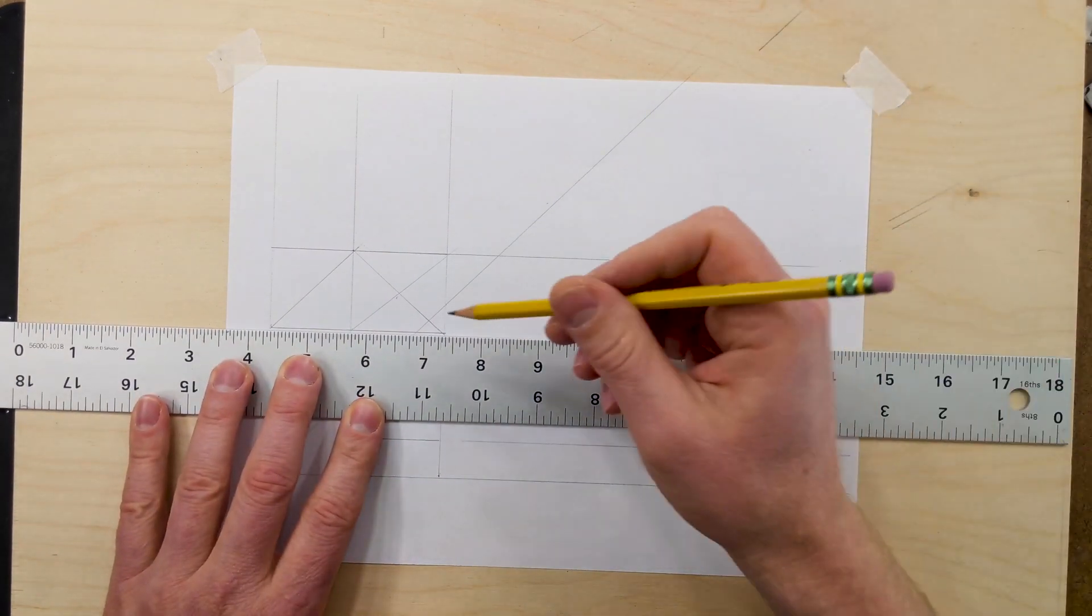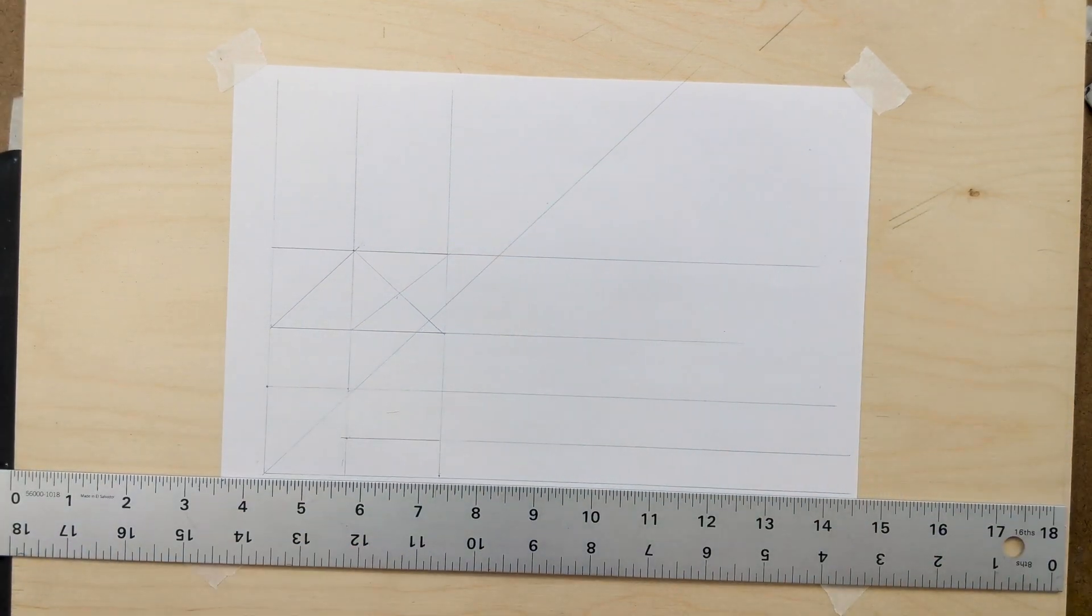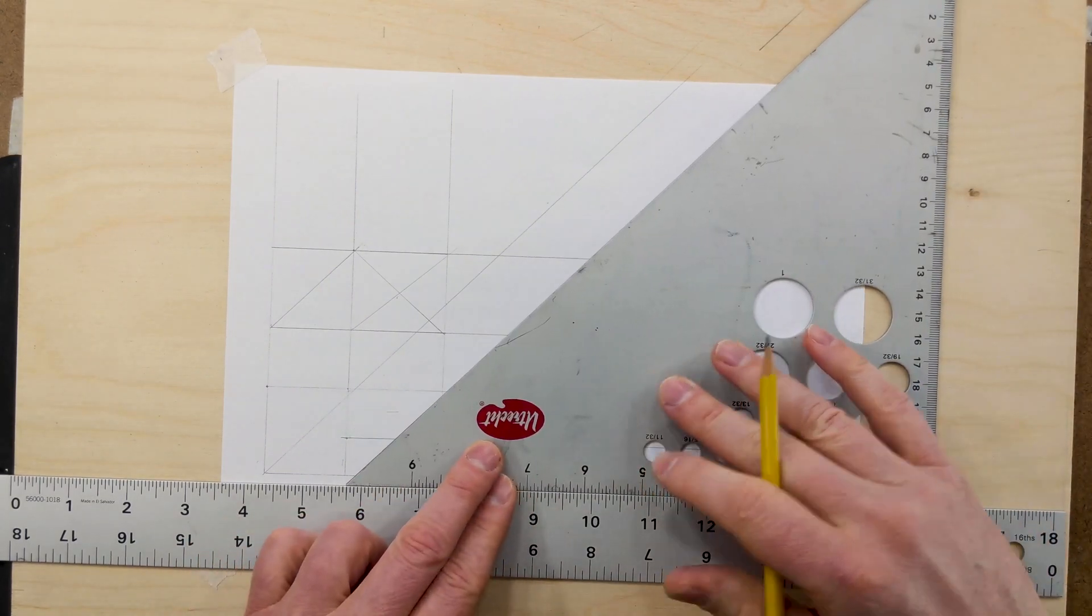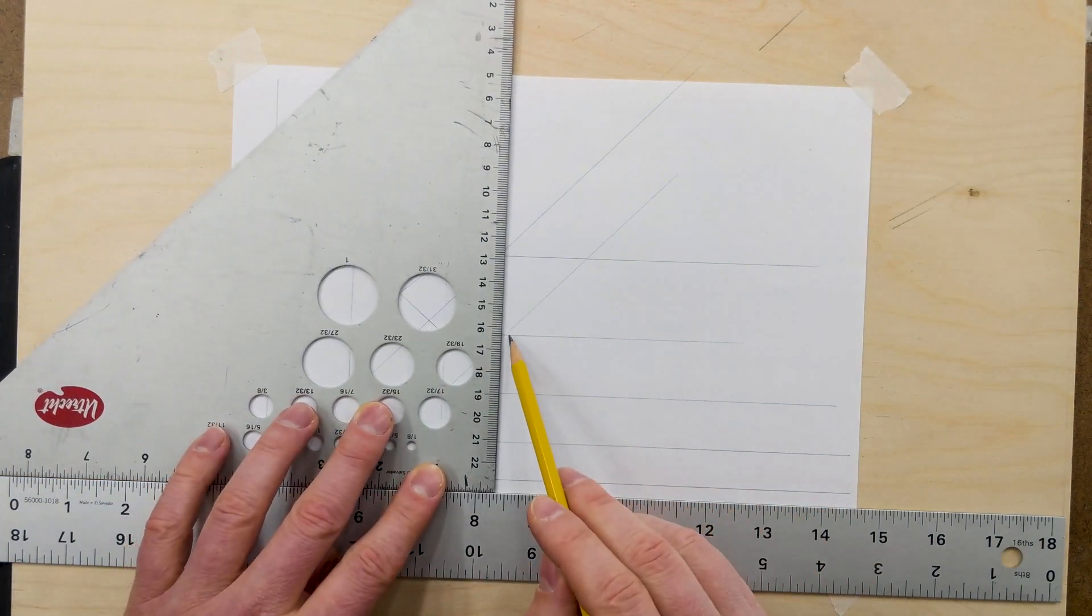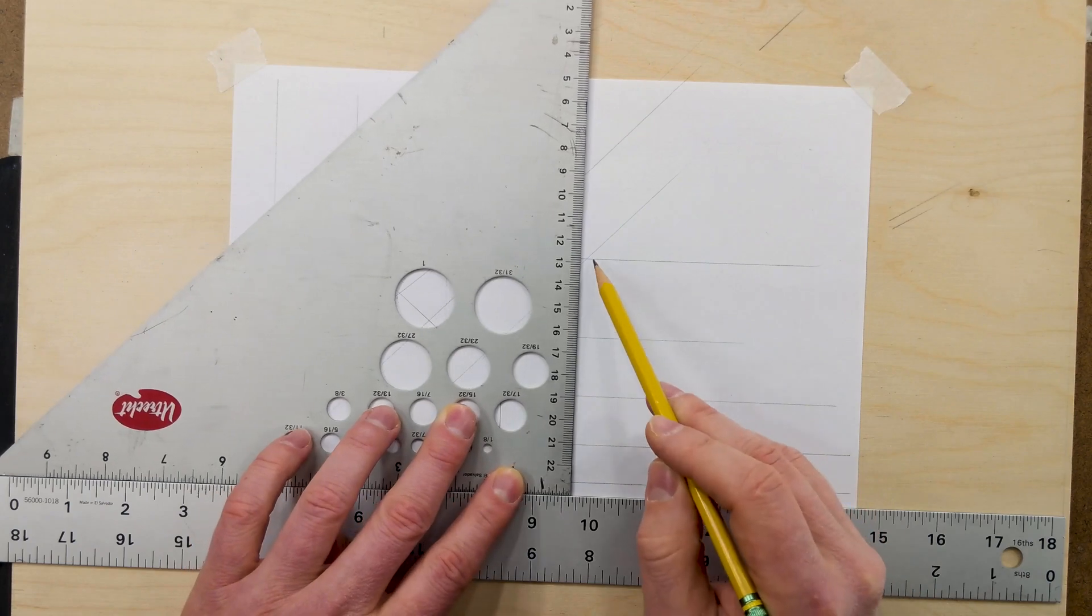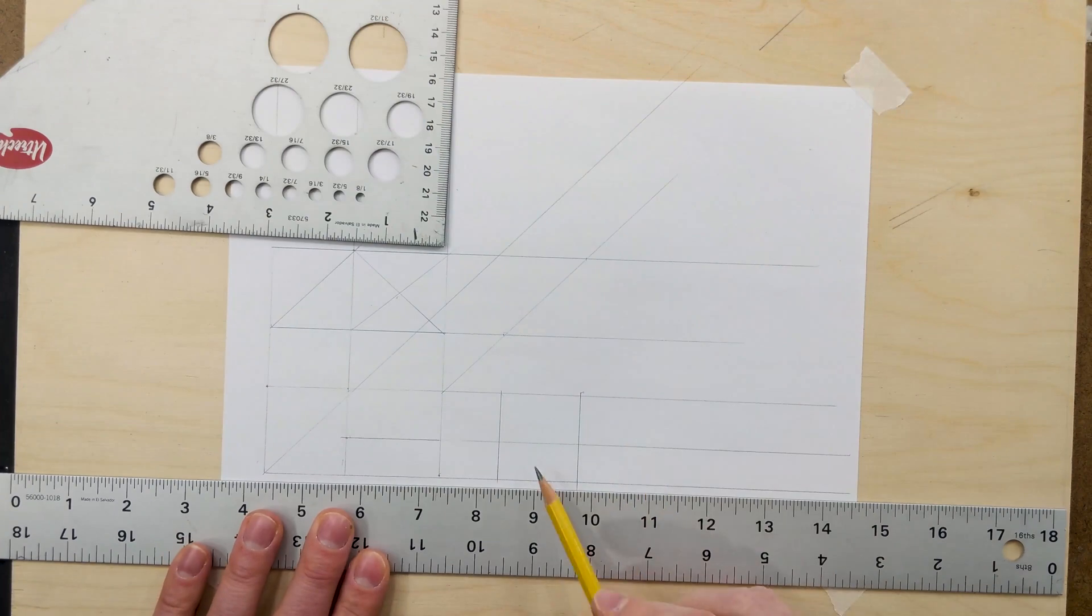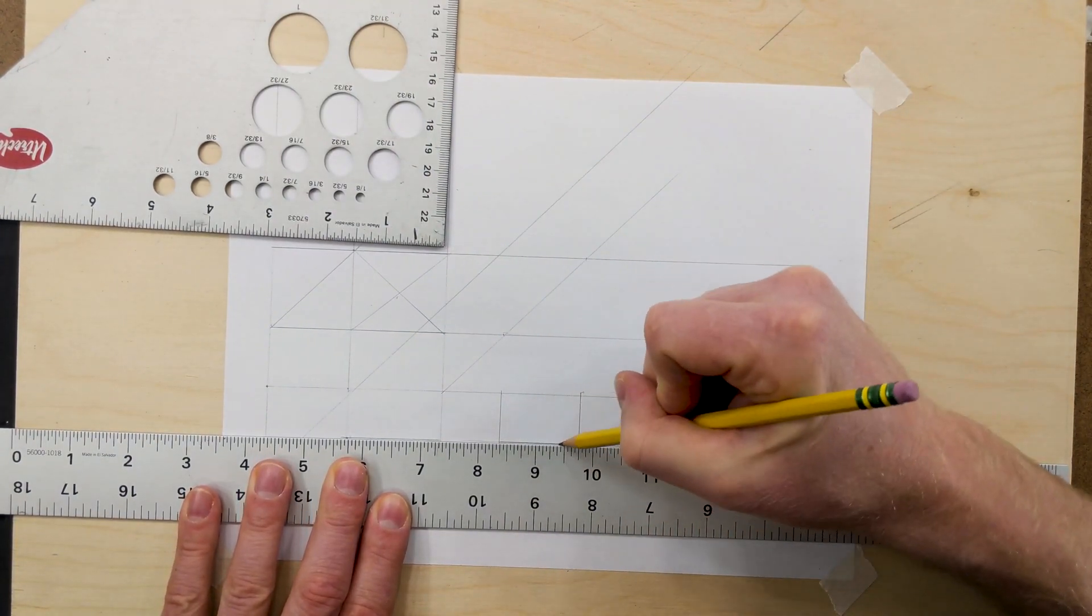So we can extend this line over as well. And we'll put another diagonal line coming up from right here. And we'll use this as our projection line coming down. So we have our mark here. And our mark here. So this will be that section. We can go ahead and darken our lines.